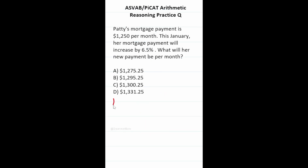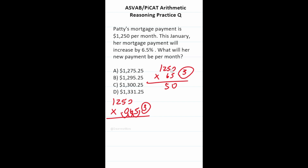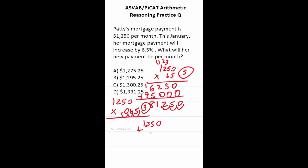This ASVAB PyCat arithmetic reasoning practice test question: someone's monthly mortgage payment of $1,250 is increasing by 6.5%, which is 0.065 in decimal form. We shift the decimal three places right to do 1250 times 65, with three decimal places to move back. Working through the multiplication and adding up the partial products gives 81250, and with three decimals back that's 81.25. Adding that increase to $1,250 gives D, $1,331.25.